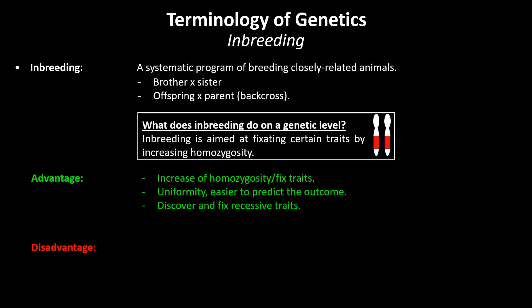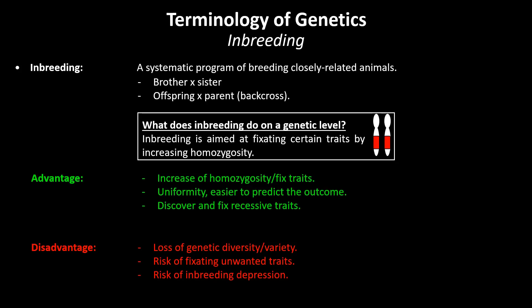Disadvantages of inbreeding are the loss of genetic diversity and variety, which sometimes can make an organism less flexible to adjust to environmental factors. As inbreeding is often based on phenotypical selection, one can unintentionally fix unwanted traits which can lead to a smaller size, slower growth or a greater susceptibility to disease. When these unwanted traits affect biological fitness and lead to a decreased fertility and viability, we speak of an inbreeding depression.